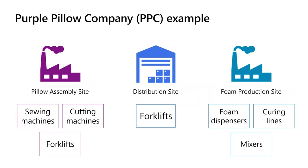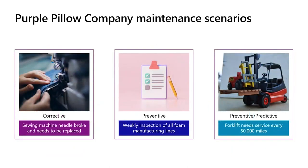In today's session we're revisiting the Purple Pillow Company example from the acquire and install session. We have three sites: a pillow manufacturing site with sewing machines, automated cutting machines, and forklifts; a distribution site with forklifts; and a foam manufacturing site with foam lines containing dispensers, curing lines, and mixers. The three maintenance scenarios today are: one corrective scenario where a sewing machine has broken a needle, one preventive scenario with a weekly inspection of foam manufacturing lines, and one preventive scenario to service a forklift based on mileage.